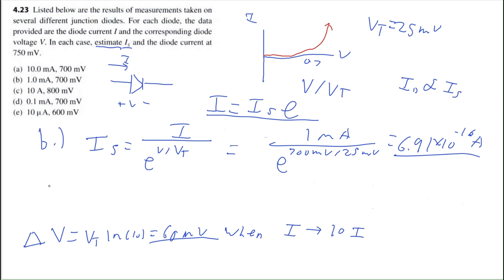For the diode current at 750 millivolts in part B: we know that adding 60 millivolts means multiplying the diode current by 10. Therefore, at approximately 760 millivolts, the diode current equals 10 times 1 milliamp, which equals 10 milliamps. That's a rough estimation — not quite at 750, but pretty close to 760.